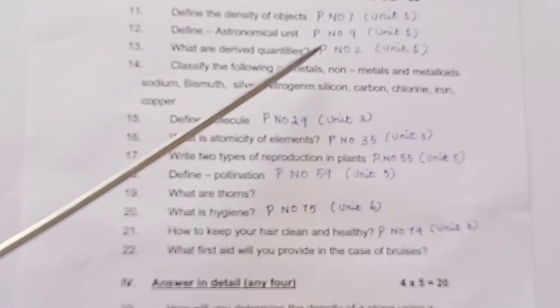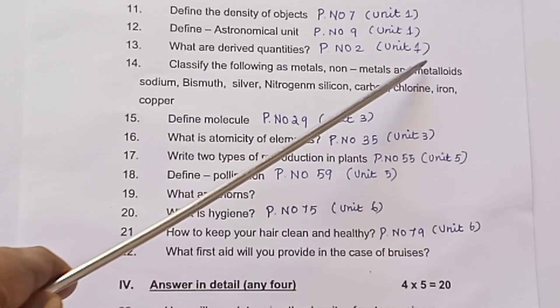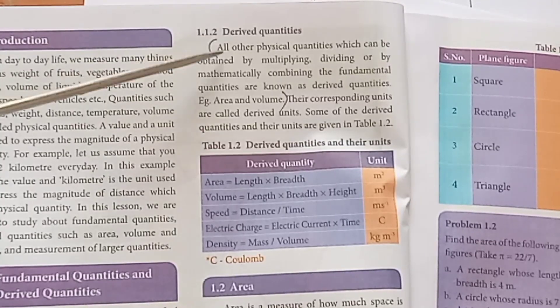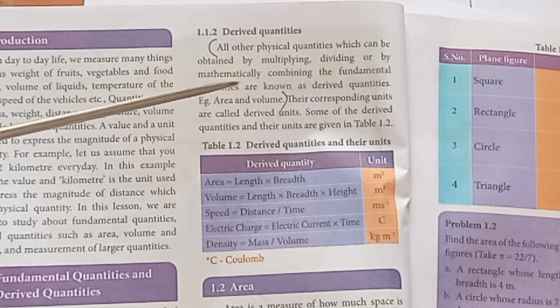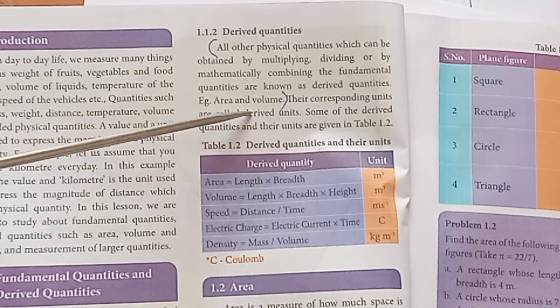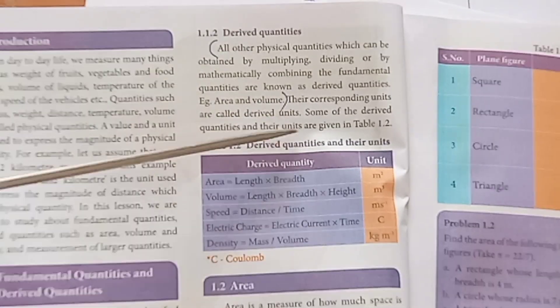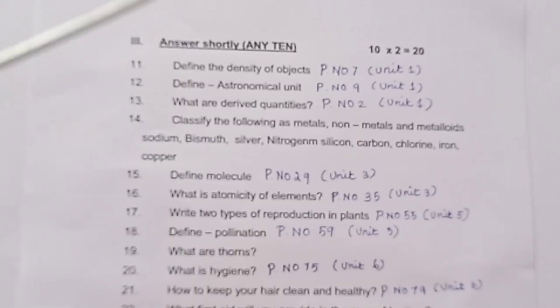Question 13: What are derived quantities? Page number 2, Unit 1. Answer: Derived quantities are all other physical quantities derived from base quantities. Examples include area and volume.